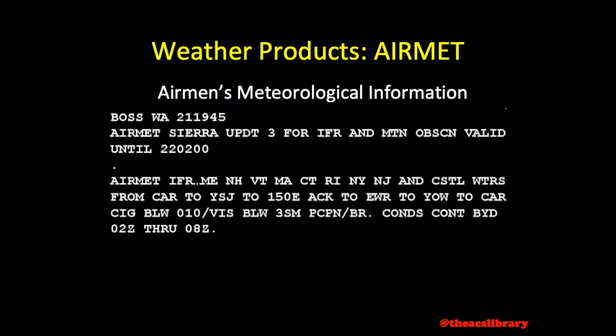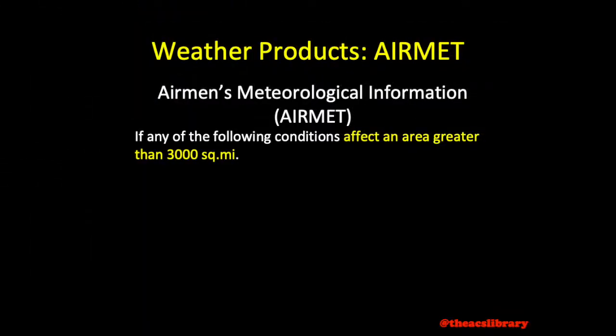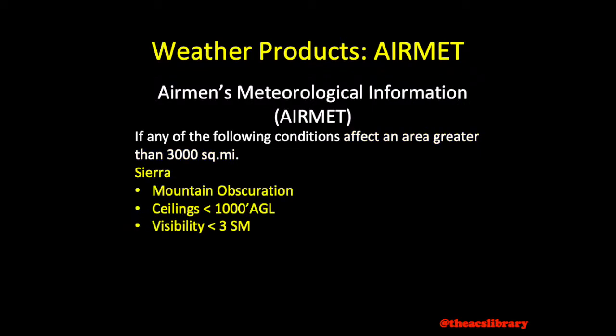Unscheduled airmets may be released as unforecasted conditions arise and remain valid for six hours. Shown below is a sample airmet. Airmets coded WA include the report type and airmet series, being either Sierra, Tango, or Zulu. Airmets are released when any of the following conditions affect an area greater than 3,000 square miles. Airmet Sierra will be issued for mountain obscuration, ceilings below 1,000 feet, and visibility below three statute miles, and will include a description of the weather phenomena causing the restricted visibility.